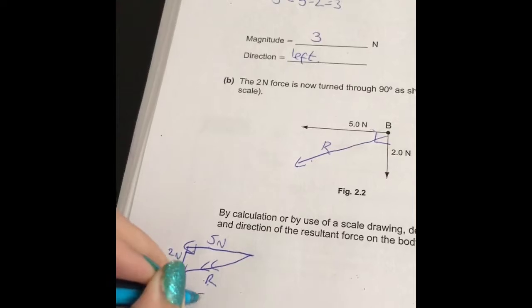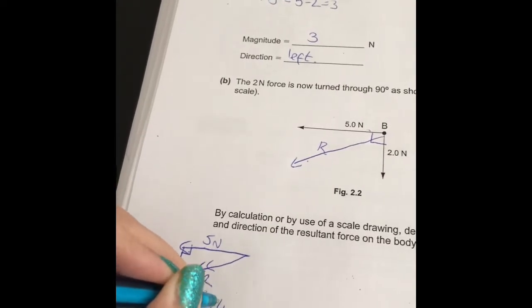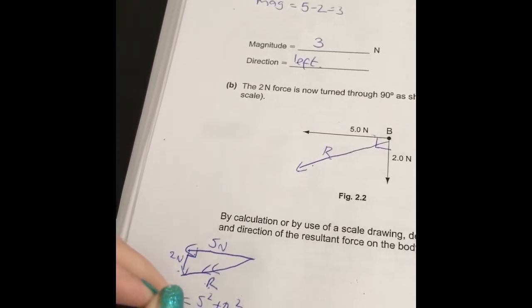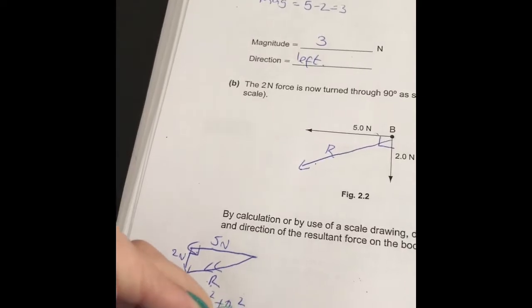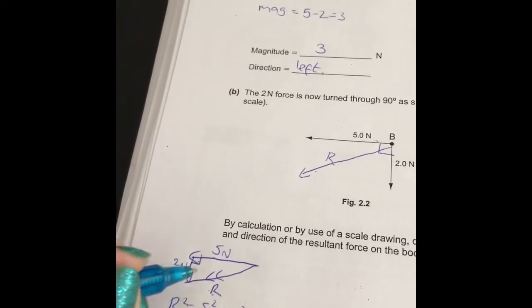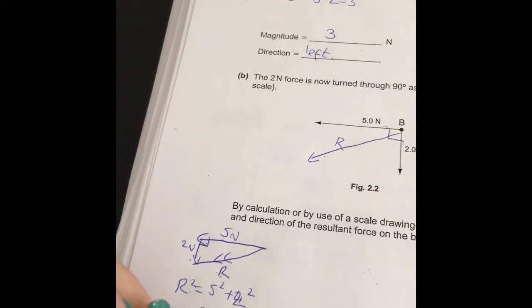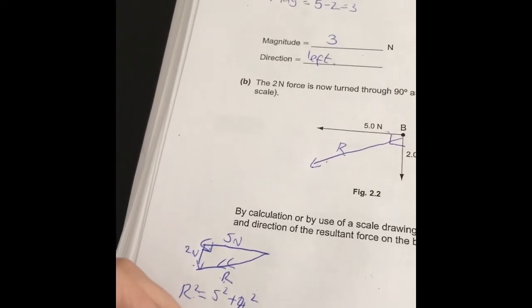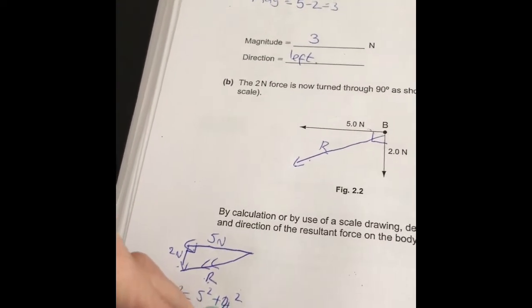So r squared is equal to 5 squared plus 2 squared. So it's 25 plus 4, which is equal to 29. But I don't want r squared, I want r. So r is the square root of 29, which is equal to 5.4.